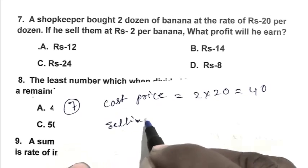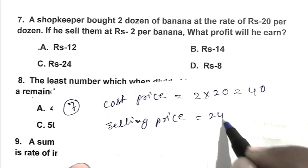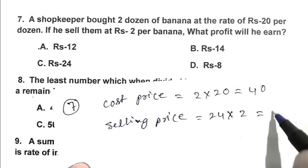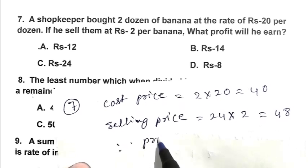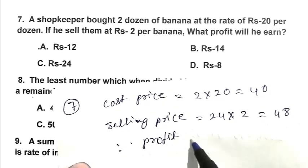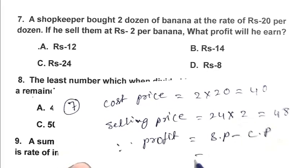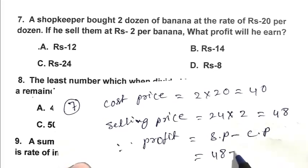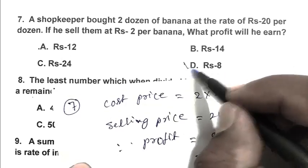Selling price is Rs 24 multiplied by 2, that is Rs 48. So profit is selling price minus cost price, that is Rs 48 less Rs 40, that is Rs 8. So friend, D is the right answer.